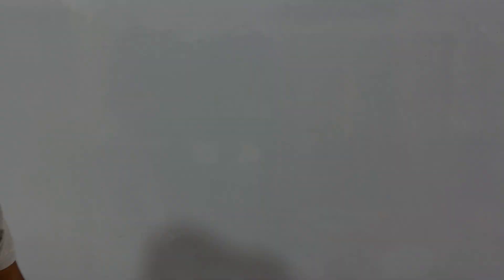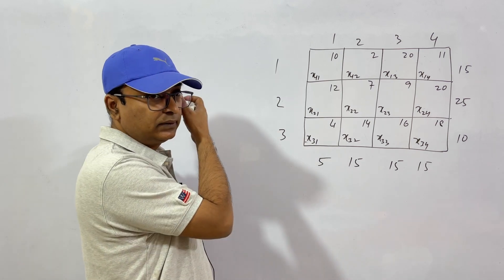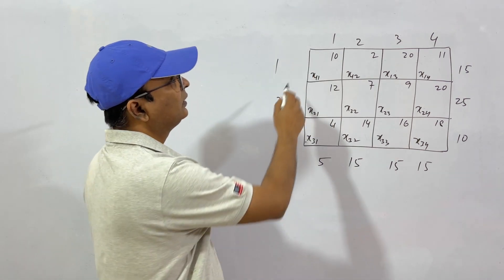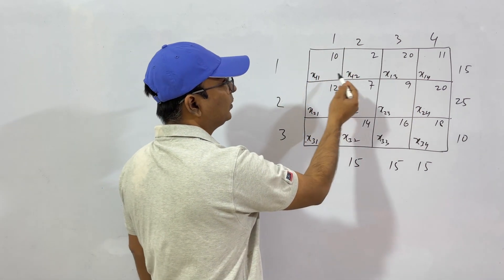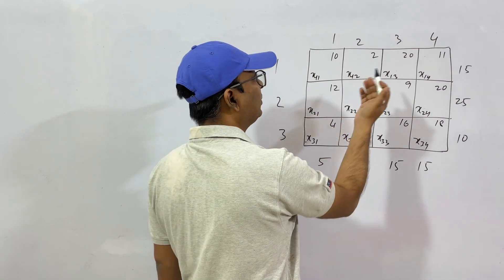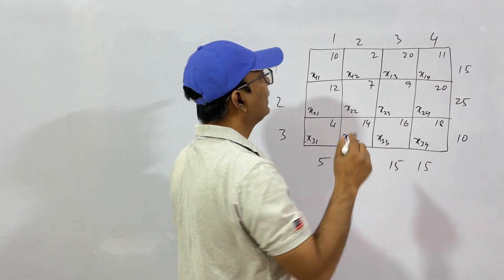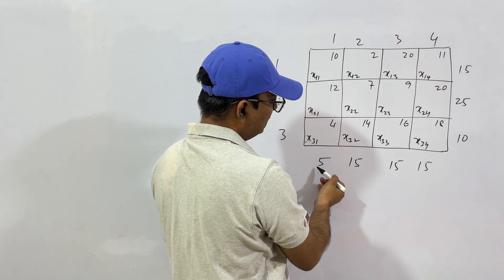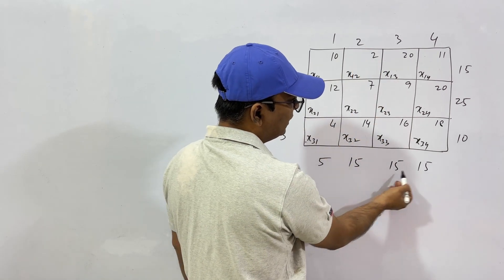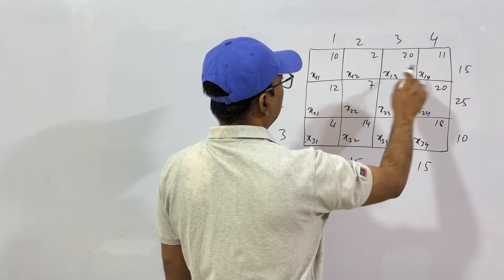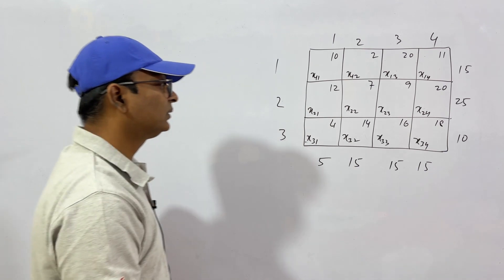Let me draw the transportation tableau. This is our problem. By now you must have a concept of how to read this table. The production units are these 3 and these are the demand units. x11, x12 are the volumes of items supplied from each source to each destination, and these are the transportation cost per unit — in rupees.